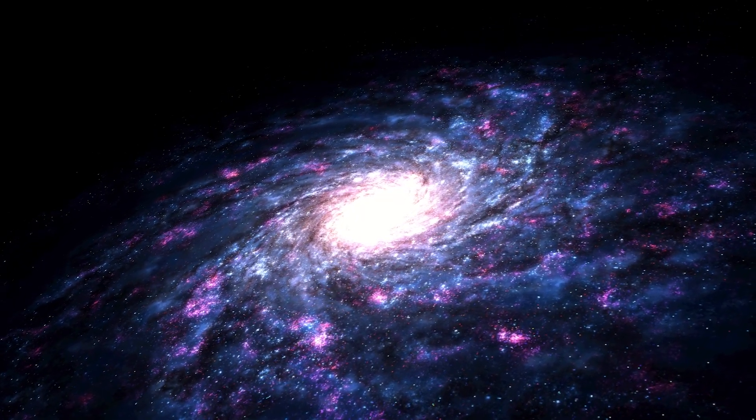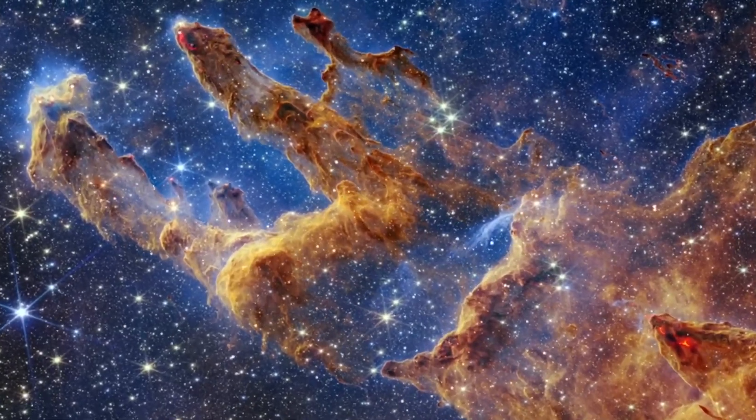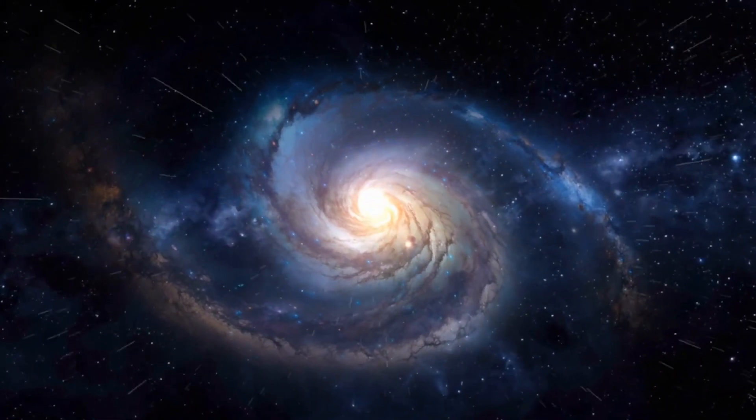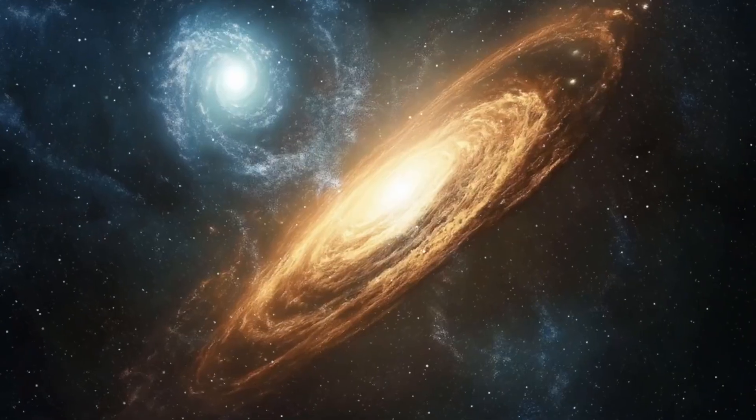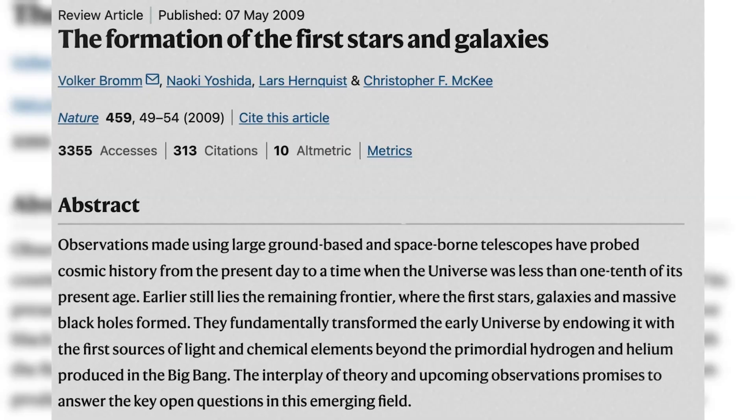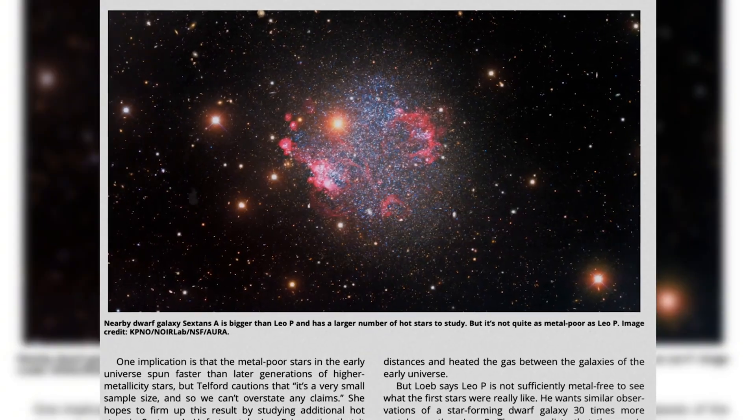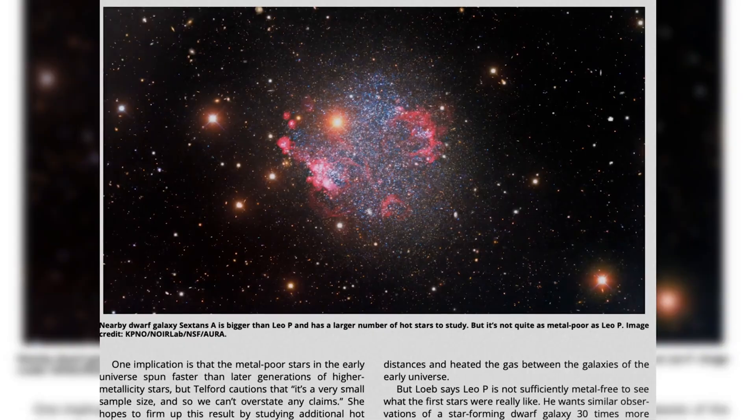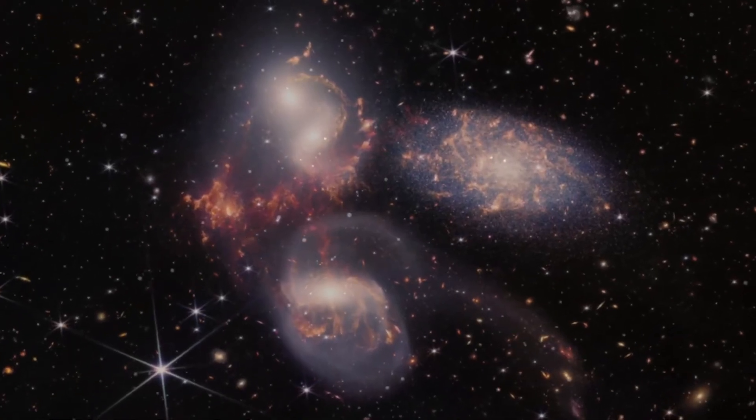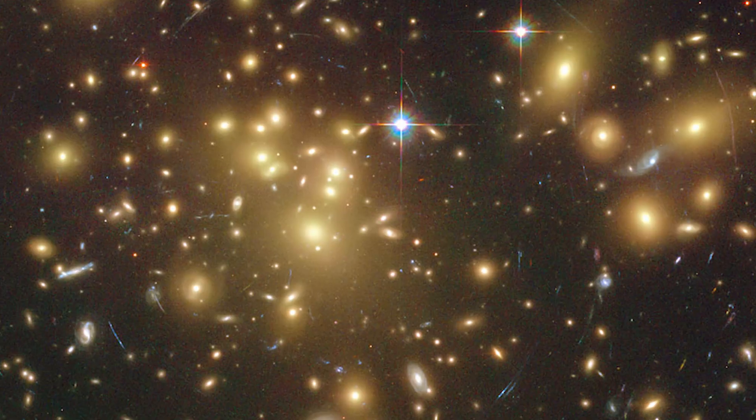Imagine this: galaxies that should be primitive, chaotic clouds of stars are instead appearing mature, structured, and in some ways resembling our own Milky Way. They are too big, too bright, and too evolved for their age. A recent paper carefully analyzed these early galaxies, and the results confirmed what many feared. Their maturity is real. These galaxies really are older and more developed than our models allow.